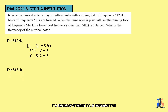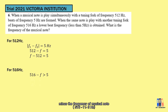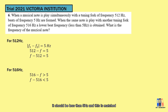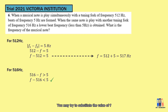The tuning fork frequency is increased from 512 Hz to 516 Hz. If the first equation is true, we would expect a higher beat frequency, since we have a bigger number minus f. For the second equation, f minus the bigger number would give less than 5 Hz — this matches the question. So we reject the first equation and use the second to get f equal to 517 Hz. We can substitute this value back into the second equation to verify.